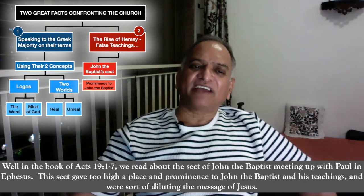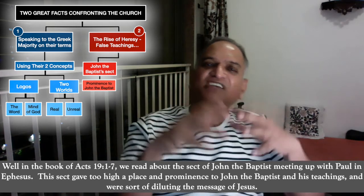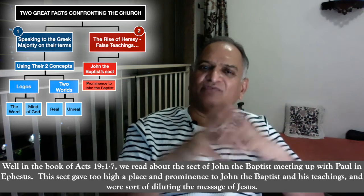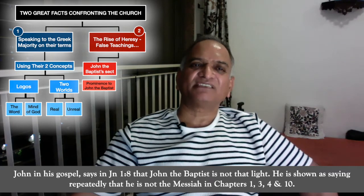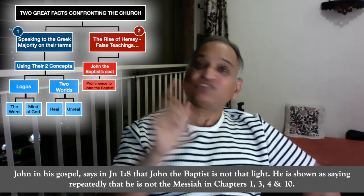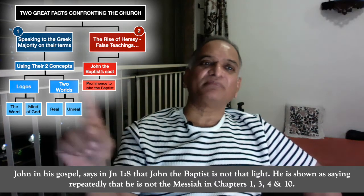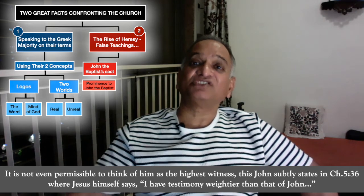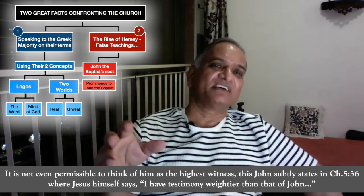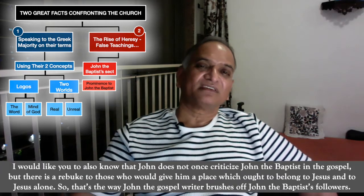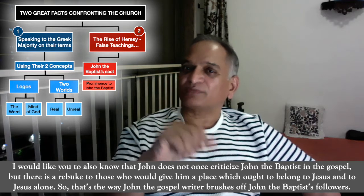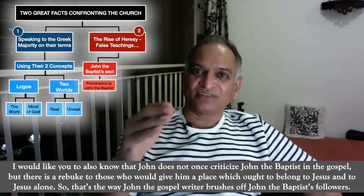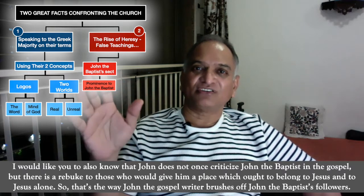We can see at least two of the heresies which the writer of the fourth Gospel sought to combat. The first heresy originated from the Jewish sect of John the Baptist, and the second heresy came from the Greek thinkers from Alexandria who were called Gnostics. In the book of Acts, chapter 19, verses 1 to 7, we read about the sect of John the Baptist meeting up with Paul in Ephesus. This sect gave too high a place and prominence to John the Baptist and to his teachings, and was sort of diluting the message of Jesus. John in his Gospel says, in chapter 1 verse 8, that John the Baptist is not that light. He is shown as saying repeatedly that he is not the Messiah in chapters 1, 3, 4 and 10. In chapter 5 verse 36, Jesus himself says, 'I have testimony weightier than that of John.' John does not once criticize John the Baptist in his Gospel, but there is a rebuke to those who would give him a place which ought to belong to Jesus and to Jesus alone.